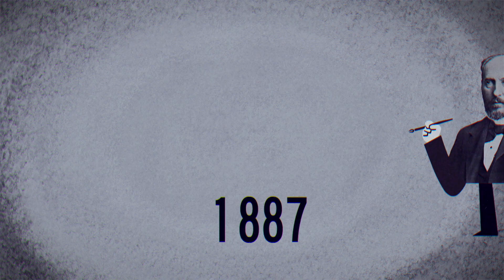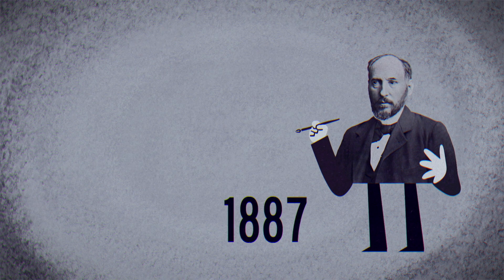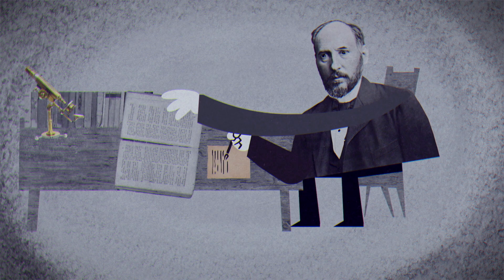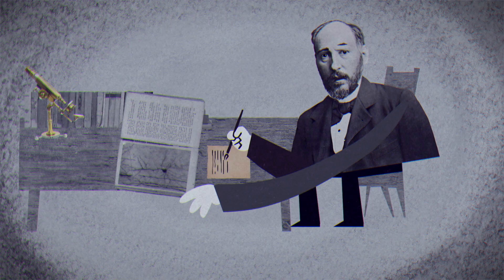Fourteen years later, a young scientist and aspiring artist named Santiago Ramón y Cajal began to build on Golgi's work. While writing a book about microscopic imaging, he came across a picture of a cell treated with Golgi's stain.